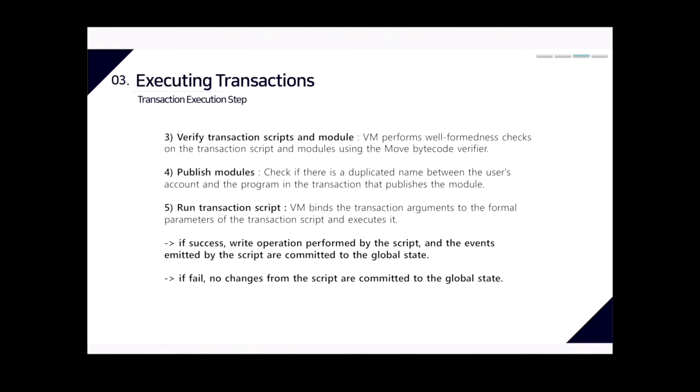Step three is verifying transaction scripts and modules. Before running or publishing any Move code, the bytecode verifier checks crucial properties like type safety, reference safety, and resource safety. Step four is publish module, where the system checks if there is a duplicate name between the user's account and the program in the transaction that publishes the module.